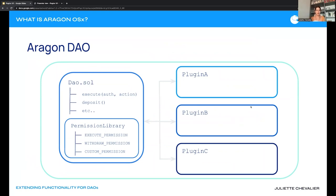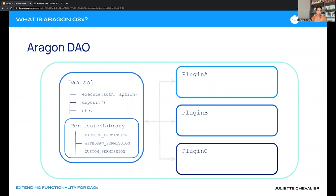Let's look specifically at what an Aragon DAO is visually. The DAO.sol contract has permissions — for example to deposit funds — and it contains the execute function, which gets called whenever we're executing actions on behalf of the DAO. It has two key parameters: the auth modifier, which checks whether the calling address has permission, and the action itself.